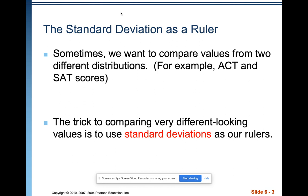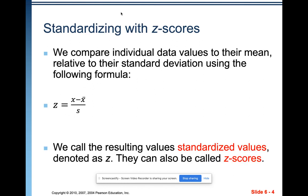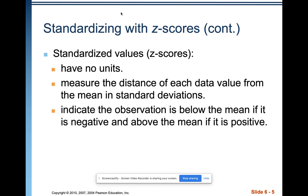The trick is to use standard deviations as our rulers. The way we standardize with z-scores is we compare individual data to their mean relative to the standard deviation using the formula: the z-score equals an observation minus the mean over the standard deviation. Since we're talking about sample results, it would be x minus x-bar over s. We call these values standardized scores or z-scores, and they mean the number of standard deviations above or below the mean. They have no units because we've divided those out.